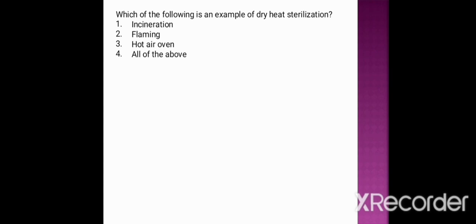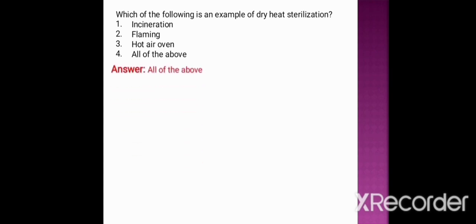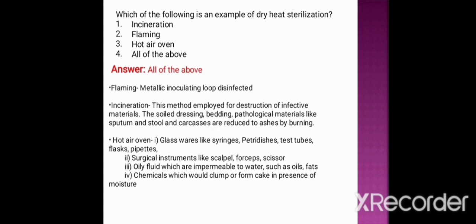First question: which of the following is an example of dry heat sterilization? Option one: incineration. Option two: flaming. Option three: hot air oven. Option four: all of the above. The correct option is all of the above — incineration, flaming, and hot air oven are all examples of dry heat sterilization. In dry heat sterilization, heat is accomplished by conduction, water plays no role, and it kills microorganisms by oxidation of molecules.